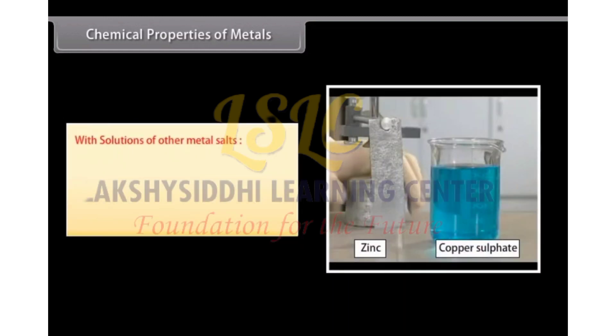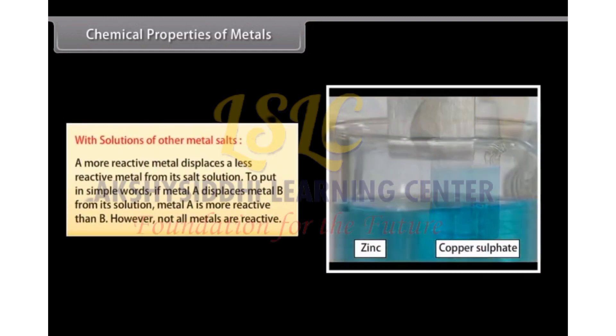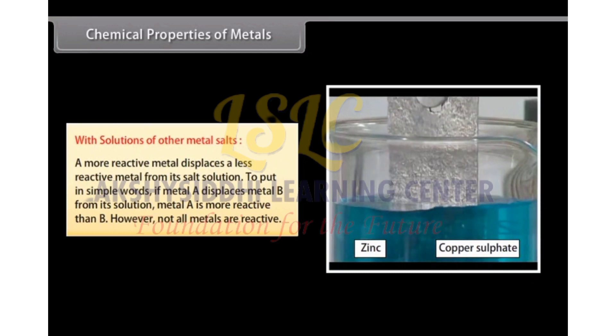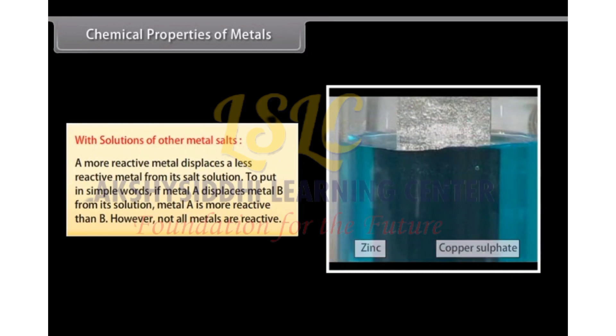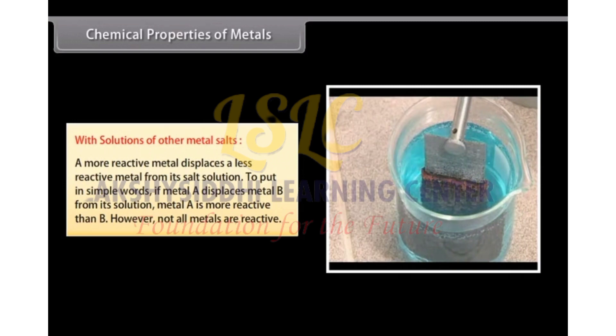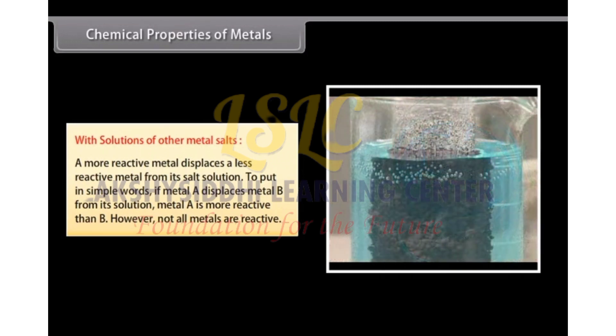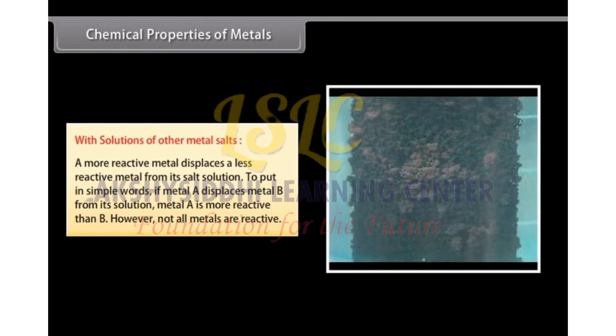With solutions of other metal salts. A more reactive metal displaces a less reactive metal from its salt solution. To put in simple words, if metal A displaces metal B from its solution, metal A is more reactive than B.